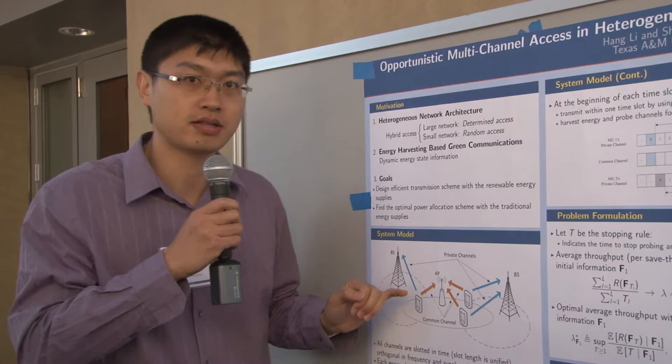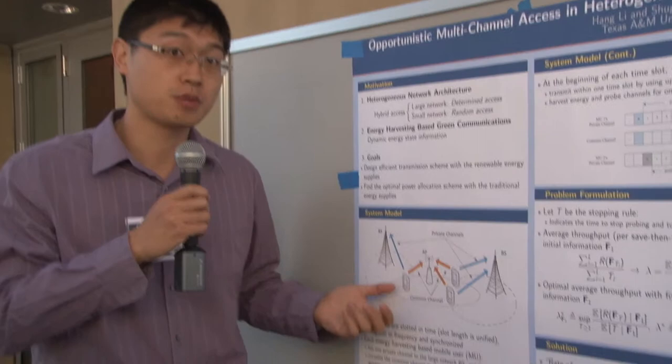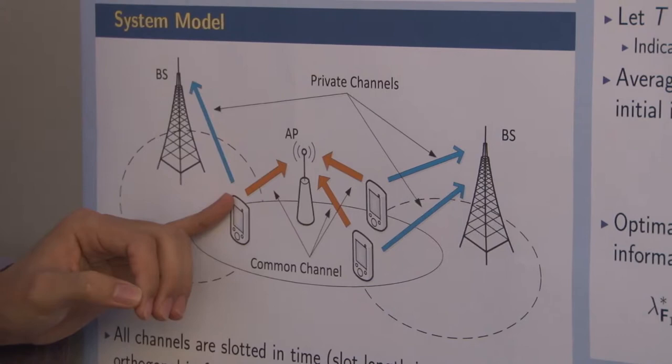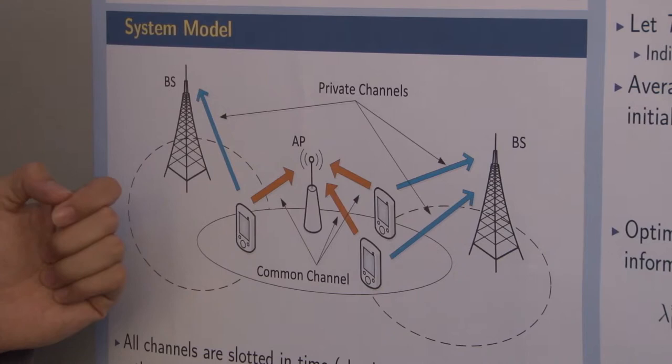And it also has a dynamic connection to the local small network AP with certain probabilities. So in this sense, each mobile user has a certain probability with two channels available.